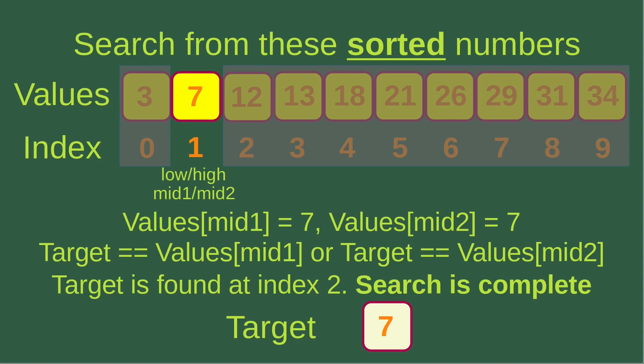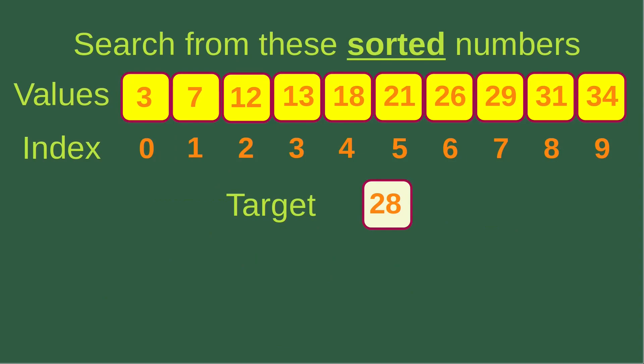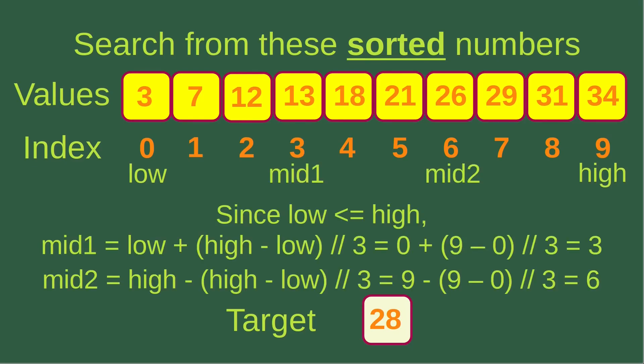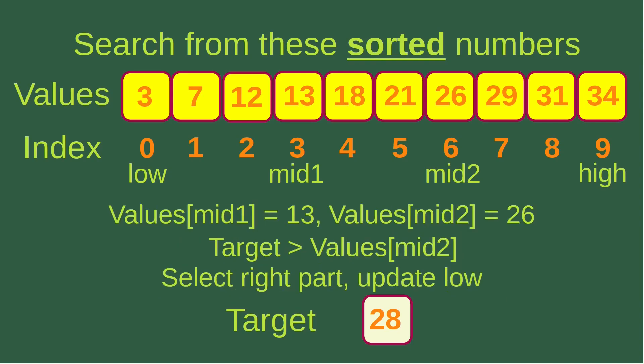The search is complete and we have found the target from the given sorted array. Let us see another example. Suppose I want to find out 28 from the sorted numbers in this array. First we indicate the low index as the far left index and the high index as the far right index, which is nine. Since low is smaller than or equal to high, we evaluate mid one and mid two: mid one is three and mid two is six. Mid one corresponds to 13 and mid two corresponds to 26. Since the target 28 is larger than 26, we select the right-hand part.